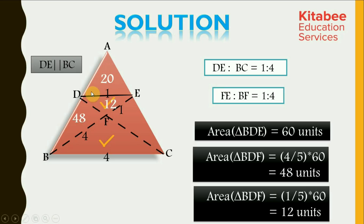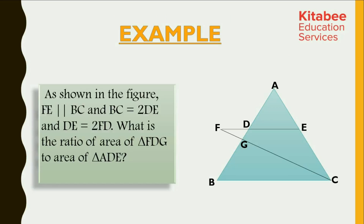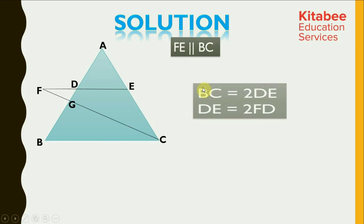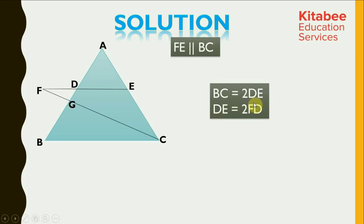Area of triangle DFE comes out to be equal to 12 units, and thus we have solved the entire problem. Let's solve one more example. FE is parallel to BC, and BC is equal to twice of DE, and DE is equal to twice of FD. What is the ratio of area of triangle FDG to the area of triangle ADE? Given these two lines are parallel, BC is twice DE, and DE is twice FD.